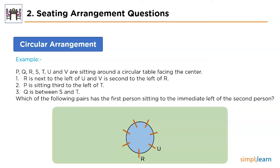The second condition says Q is between S and T, meaning we need three consecutive empty positions. The only group with three empty positions is between V and U, so we add S, T and Q there.